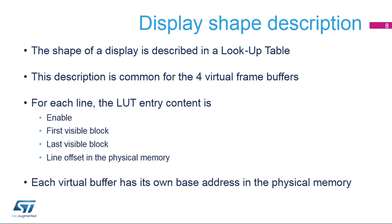For each line, the following parameters are stored: the enable bit of the line, the number of the first visible block, the number of the last visible block, and the line offset in the physical memory. The line offset is the offset between the physical buffer base address programmed by the user and the address where block 0 of the line has to be stored.